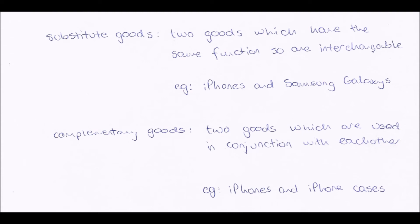If our cross elasticity of demand number is positive, then the two goods we're examining — in this case iPhones and Samsung Galaxies — are substitute goods. They have a positive cross elasticity of demand. So if the price of iPhones were to go up, then the demand for Samsung Galaxies would go up, because it's less attractive to buy iPhones when they're more expensive, so people will go and buy Samsung Galaxies because they're cheaper.